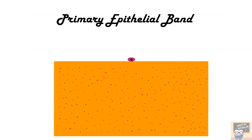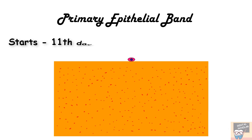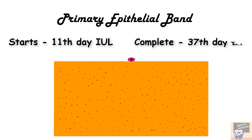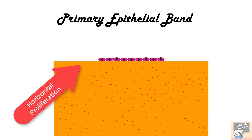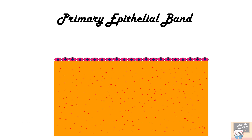Tooth formation begins with the primary epithelial band formation. The primary epithelial band starts to form at around the 11th day of intrauterine life and would complete at around the 37th day of intrauterine life. The primary epithelial band forms by epithelial cells proliferating in the horizontal plane, after which the plane of mitosis changes from horizontal to vertical.